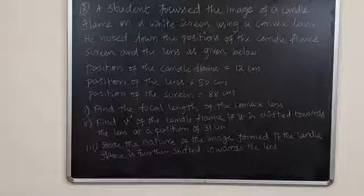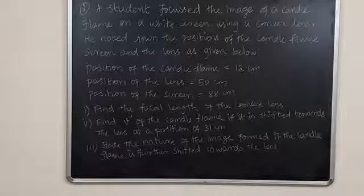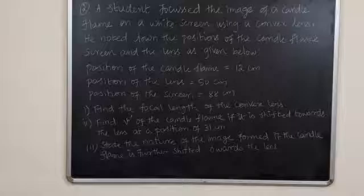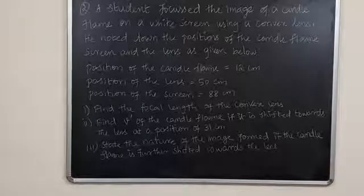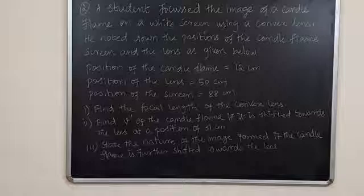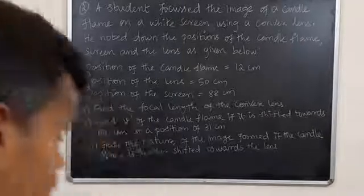Here the V dash stands for image distance of the candle flame. And third subquestion, state the nature of the image formed if the candle flame is further shifted towards the lens. Now, we move on to solve this problem.